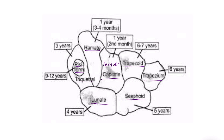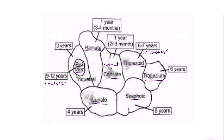The smallest carpal bone is the pisiform. The second smallest is the trapezoid. The largest carpal bone in the proximal row is the scaphoid. The capitate is the largest overall because it is the first to appear and continues ossification for a longer time, making it the largest carpal bone.